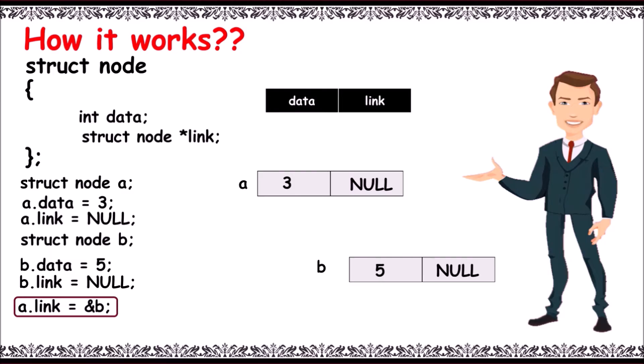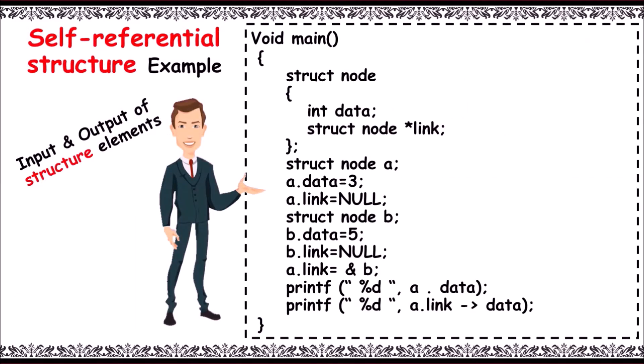Now null in a.link is replaced with the address of node b. You can see here it points to node b. Self-referential structure example in main function...